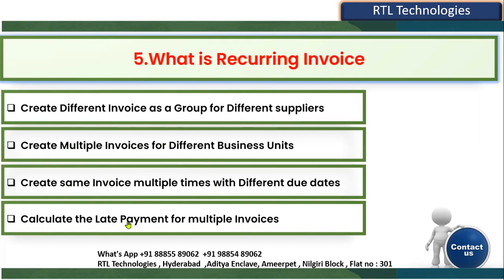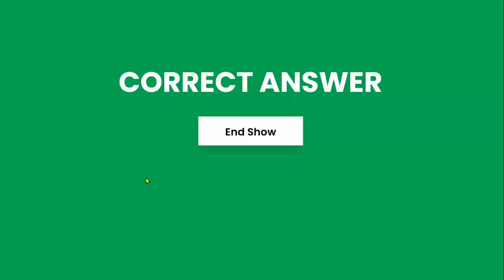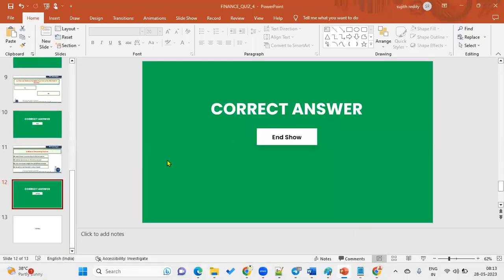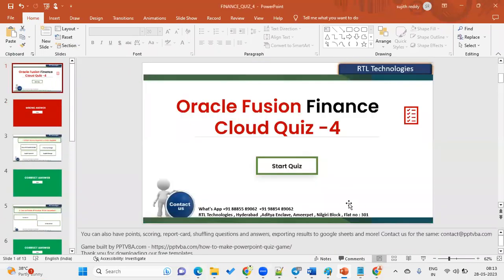The answer is: a Recurring Invoice is used to create the same invoice multiple times with different due dates. For example, if a client wants to generate 20 invoices with the same invoice amount and same supplier but with different due dates, that scenario uses the Recurring Invoice. This concludes the Account Payables quiz. Please rate it a number four.